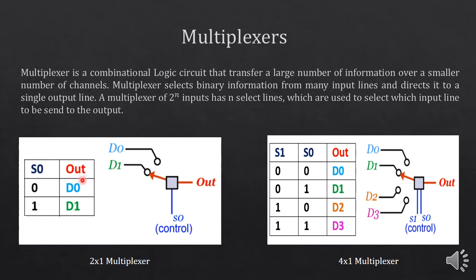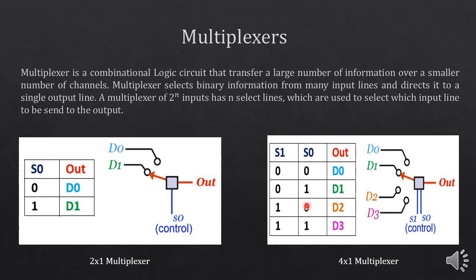A 2x1 multiplexer has two input data lines and one control line. If the control line is 0, D0 will be sent to the output; if the control line is 1, D1 will be sent to the output. A 4x1 multiplexer has four input data lines and two control lines. Selecting S1S0 = 00 sends D0, 01 sends D1, 10 sends D2, and 11 sends D3 to the output.